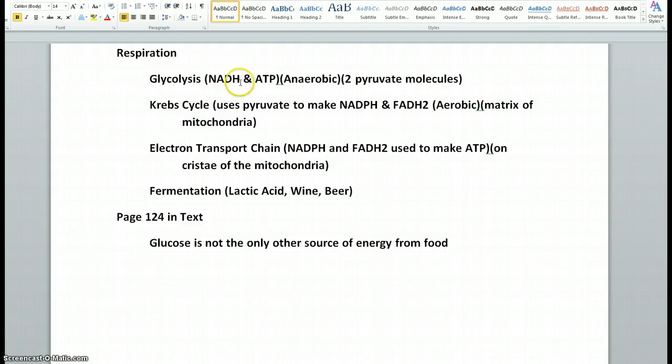But it is these pyruvate molecules then that feed into the Krebs cycle. They use the pyruvate to make NADPH and FADH2, and this is aerobic, and this occurs in the matrix of the mitochondria. Then the NADPH and FADH2 are moved, they're right there next to it, they move by diffusion to the cristae of the mitochondria, and they make ATP there. So the Krebs cycle is the aerobic part to feed these molecules with the extra hydrogens on them, protons, into the mitochondria on the cristae to the electron transport chain.